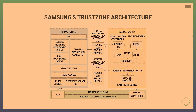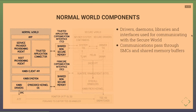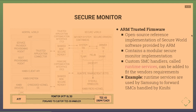In the normal world, drivers, daemons, libraries, and interfaces communicate with the secure world via SMCs. Since SMCs cannot pass much information, they set up a shared memory buffer and transfer most data through it. Samsung uses ARM Trusted Firmware as the secure monitor implementation, which is open source, heavily reviewed, and modular — allowing vendors to adapt it to their needs.